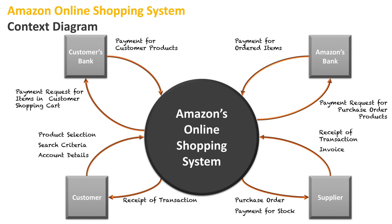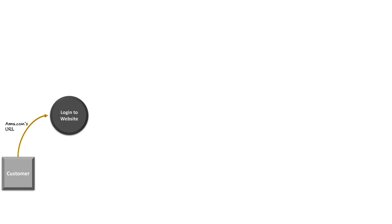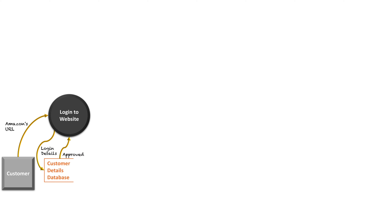Now let's look at the data flow diagram illustrating all of this. The customer types in Amazon's URL and goes to the website. In order to get into the business side of the website so they can start buying products, they need to enter their login and password, which will be checked against a customer details database. If the account matches, they're approved.